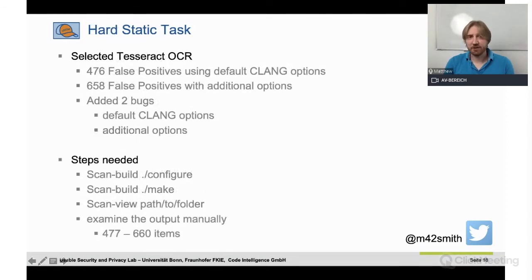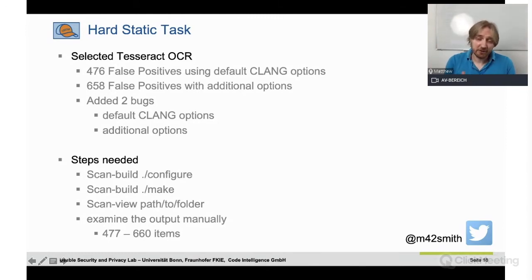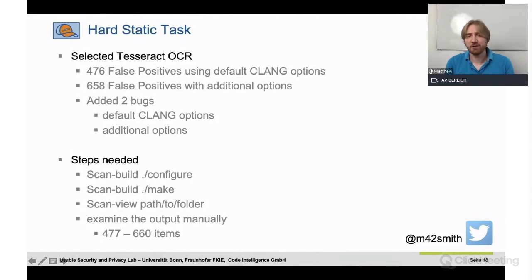For the harder task, we selected Tesseract, which with standard Clang options gives you 476 false positives — up to 658 with additional options. We added two bugs: one found by default options and another found only by adding additional options. We did that to see if participants would, without being prompted, run additional checks or just use the software as-is. The steps were exactly the same as the easy case, but instead of five items in the report there were 477 or up to 660 — a completely different usability challenge.